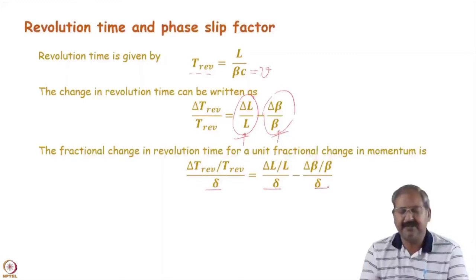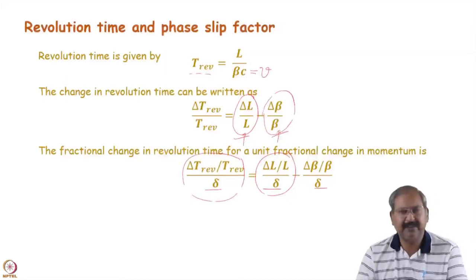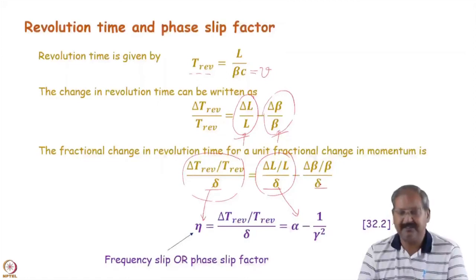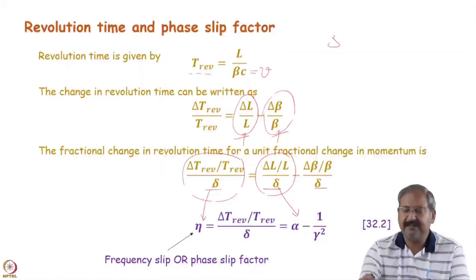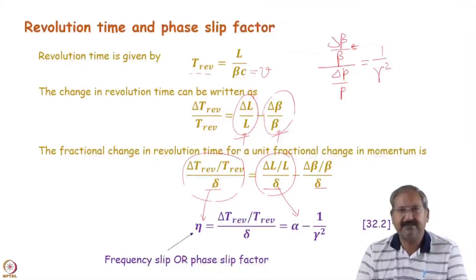The quantity delta L / L over delta p / p is the momentum compaction factor alpha. The other quantity — delta beta / beta divided by delta p / p — is given the name 'phase slip factor' or 'frequency slip factor' in accelerator physics, denoted eta. So eta = alpha − delta beta/beta over delta p/p. It can be shown that delta beta/beta divided by delta p/p equals 1/gamma^2. This is an exercise for you to prove; it is straightforward from p = beta * c * gamma.